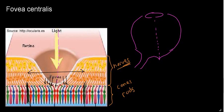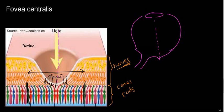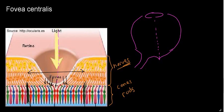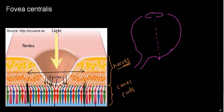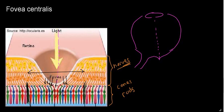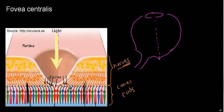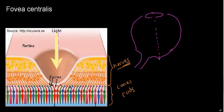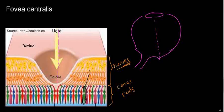In everyday life, when we're focusing on different objects, we're using all of the cones in the fovea to resolve the image. A cone here has an action potential, gets a photon, and relays the information up to the nerve cells, which relay it to the optic nerve.